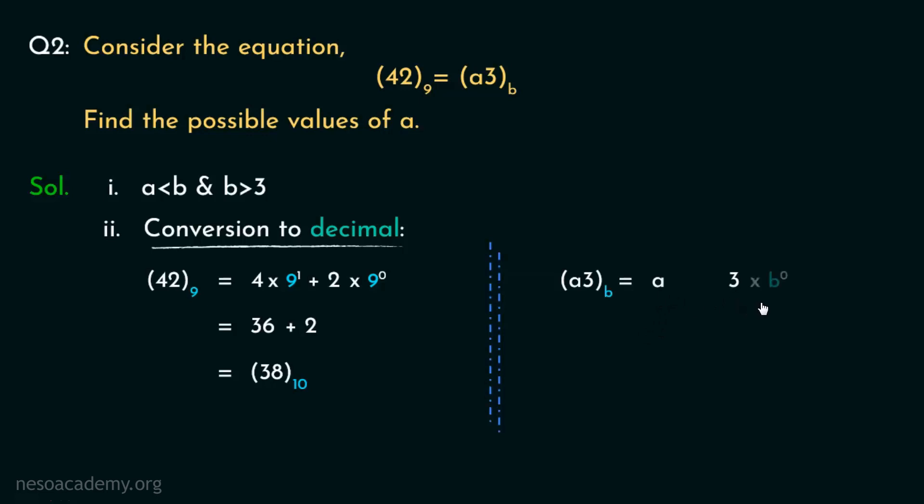The place values are b⁰ and b¹. So (a3) base b in decimal would be ab plus 3. Since we have already acquired the respective decimal values, let's now compare them. Now, subtracting 3 from both the sides, we will determine that the value of ab is 35. Alright, let's now try to determine the possible values of a and b first.